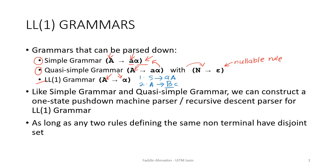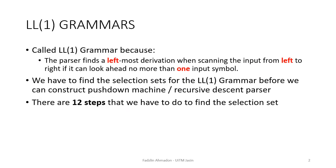Just like simple grammar and quasi-simple grammar, we can construct a push-down machine and also a recursive descent parser for our LL1 grammar. We can use these parsers to check whether an input string is accepted or rejected by our LL1 grammar. However, LL1 grammar still needs to follow the rule that if you have two rules derived from the same non-terminal, they must have disjointed selection sets.